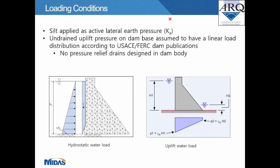Further loading conditions: silt load was applied as active lateral earth pressure on the upstream face. Undrained uplift pressure on the dam base was assumed to have a linear load distribution per USACE, FERC, and USBR publications, as no pressure relief drains were designed into the dam body. Images show a gravity dam section with hydrostatic loading and a typical uplift load diagram for undrained conditions.